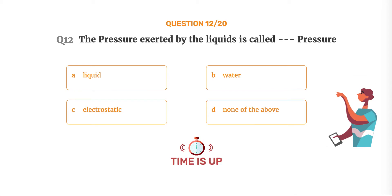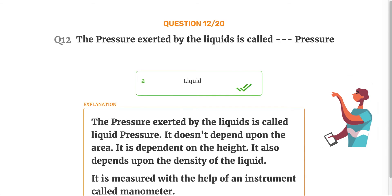The correct answer is Option A: Liquid. The pressure exerted by the liquids is called liquid pressure. It doesn't depend upon the area. It is dependent on the height. It also depends upon the density of the liquid. It is measured with the help of an instrument called manometer.